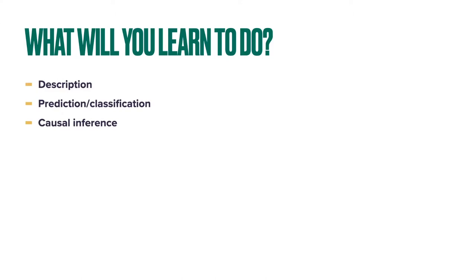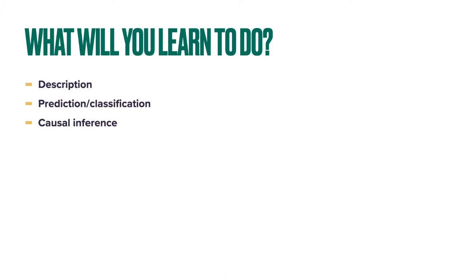What are you going to learn to do? Broadly speaking, there are three goals of statistics and data science: prediction and classification, description, and causal inference. Those may be familiar ideas, but we learn to do them quantitatively using data. You can think about whether we're talking about the past or the future, and whether we're talking about passive observation of the world or some intervention — going and manipulating things experimentally.